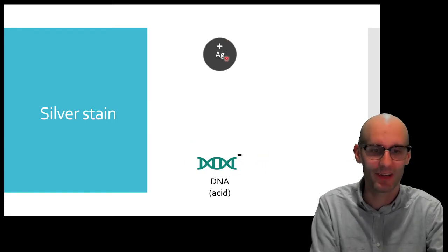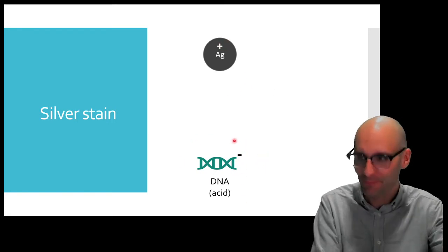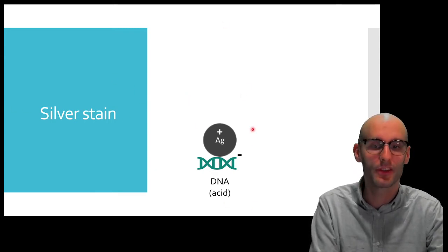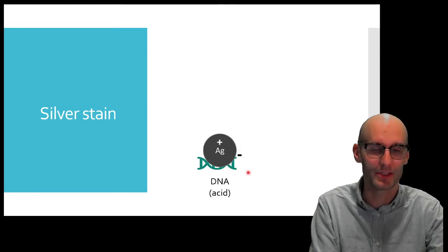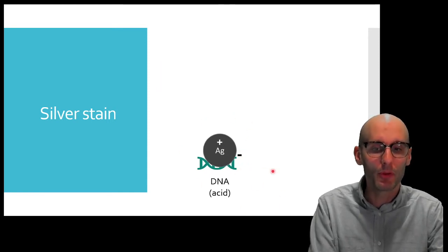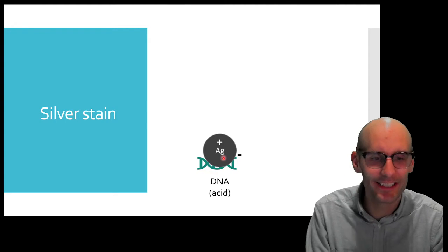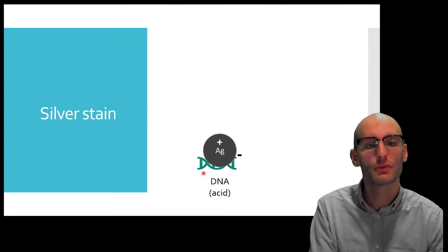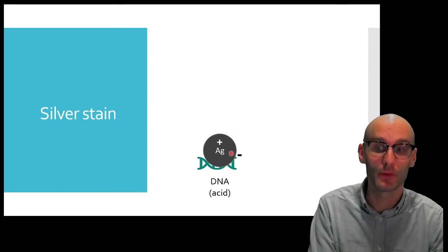Now, opposites attract, right? So, positives attract negatives. There's electromagnetic force going on here. So, these two molecules are going to attract each other. So, the silver is going to come along and be attracted to it. Now, an important thing here is we still can't see it. It's still a silver ion. So, we cannot visualize it.